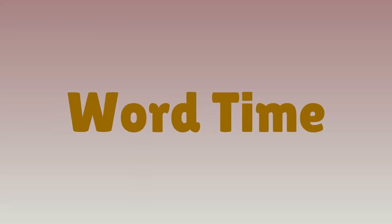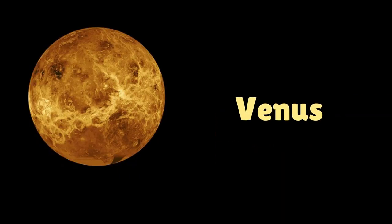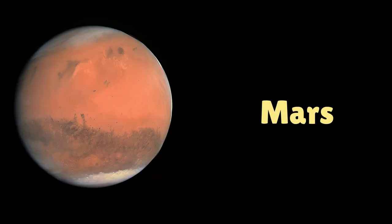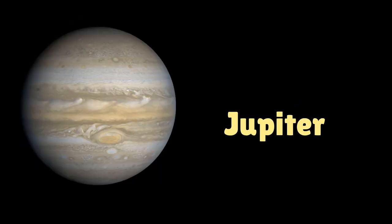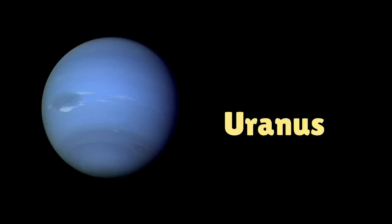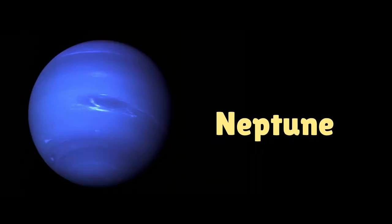Word time. Planets. Mercury. Venus. Earth. Mars. Jupiter. Saturn. Uranus. Neptune. Pluto.